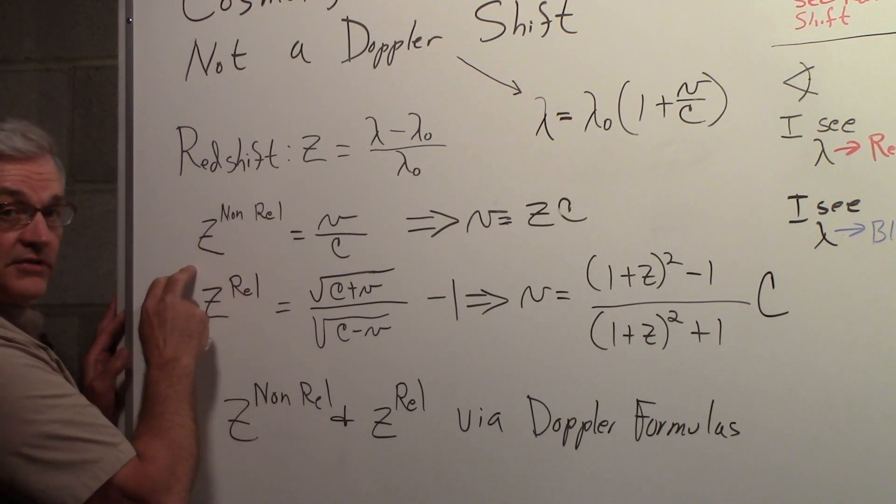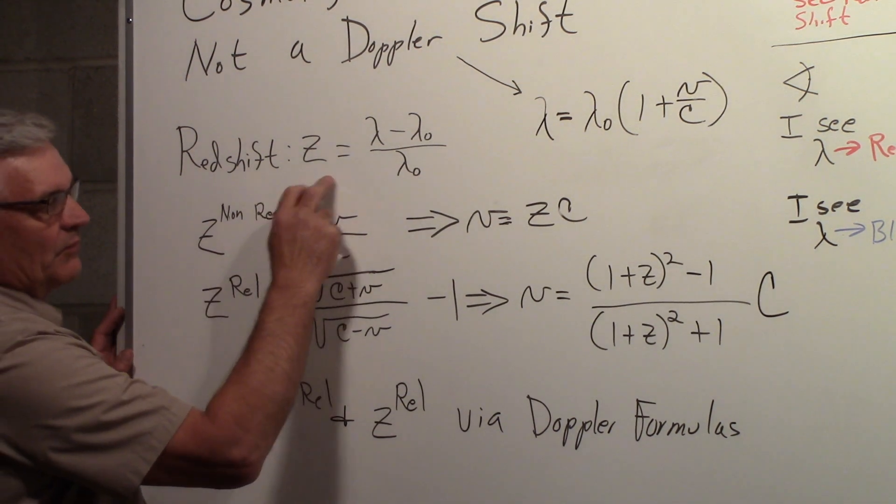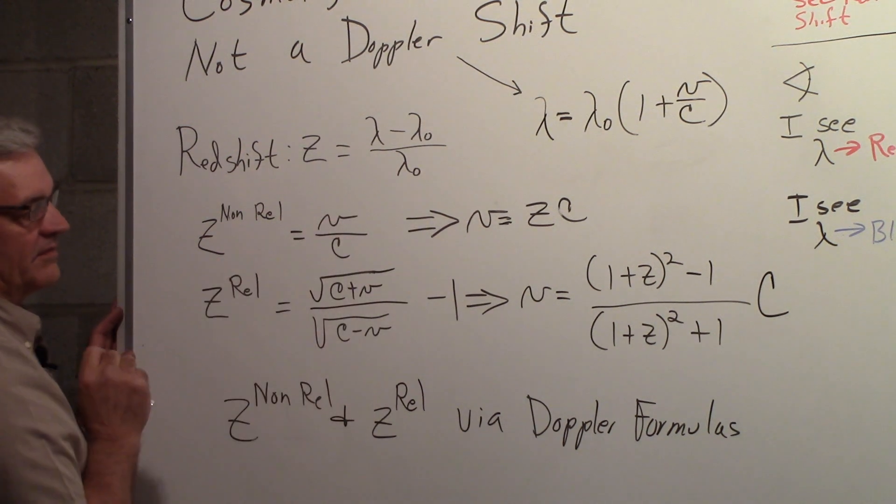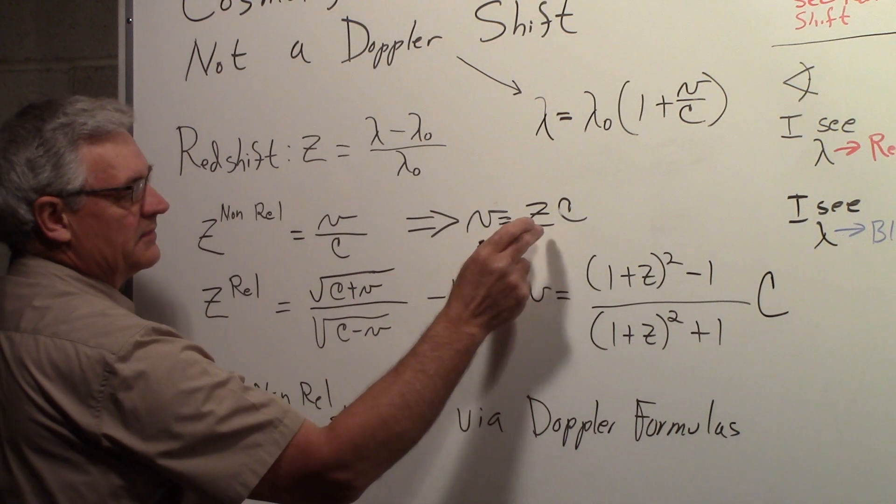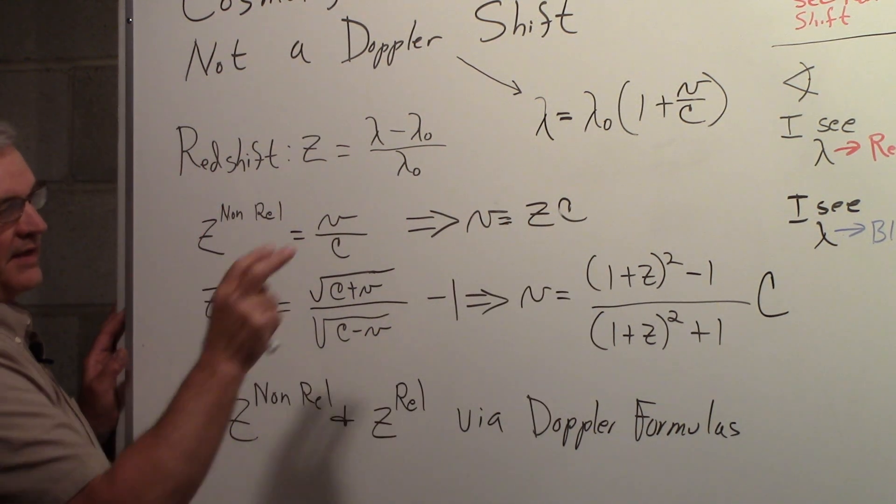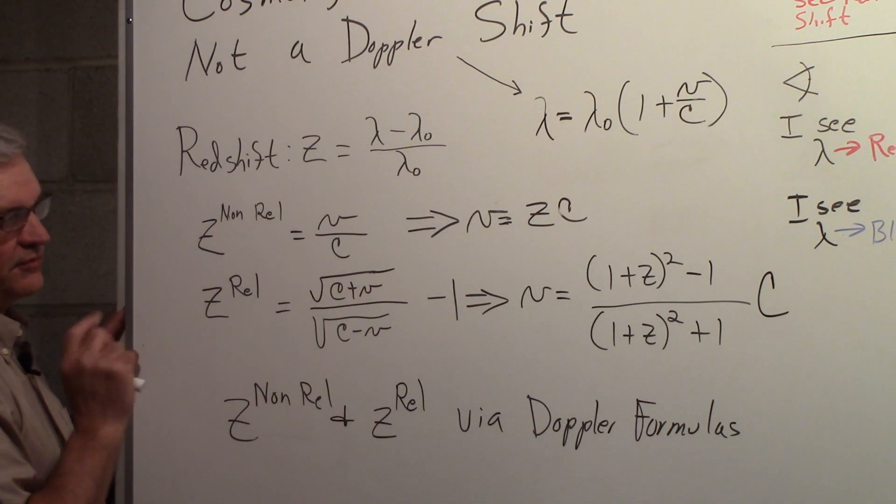So the z non-relativistic is then v/c. That's what we get. We substitute that into here, we get v/c. So the velocity is equal to the redshift times c. Now, in case of the Doppler, we can also have blue shift. It's just that we have to keep track of the sign to see that.